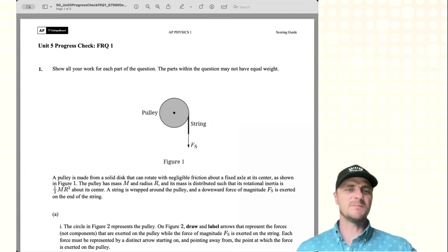We've got a pulley, and it's made from a solid disk that can rotate with negligible friction about a fixed axle at its center, as shown in this figure. The pulley has a mass M and a radius R, and its mass is distributed such that its rotational inertia is 1/3 MR² about its center. A string is wrapped around the pulley, and a downward force of magnitude FS is exerted on the end of the string.